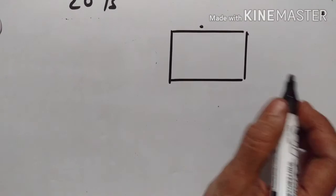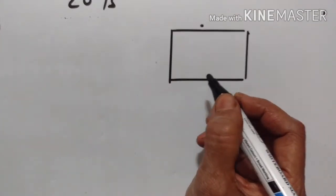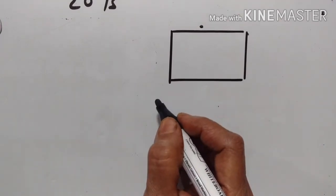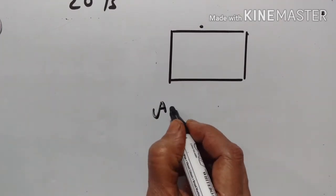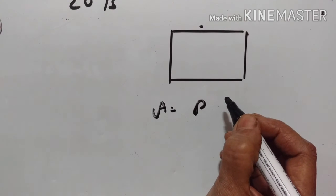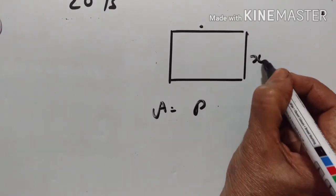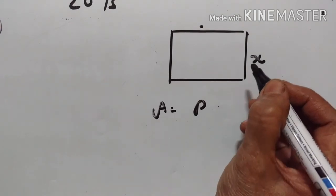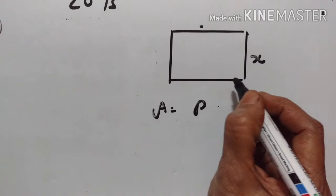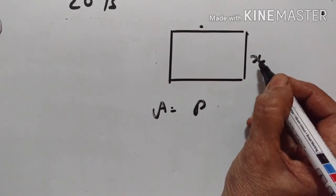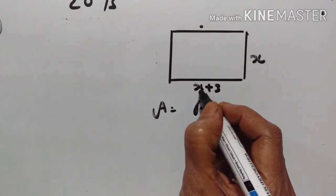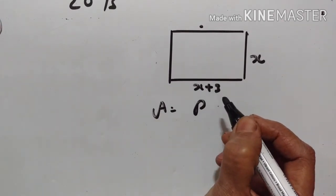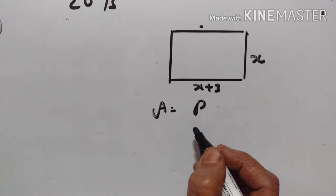Eleventh problem. The length of a rectangular veranda is 3 meters more than its breadth. The numerical value of its area is equal to the numerical value of its perimeter. Taking x as the breadth of the veranda, write an equation in x that represents the above statement.